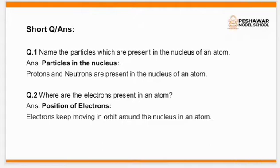Question number 2: Where are the electrons present in an atom? Give your heading: Position of electrons. Answer: Electrons keep moving in orbit around the nucleus in an atom.